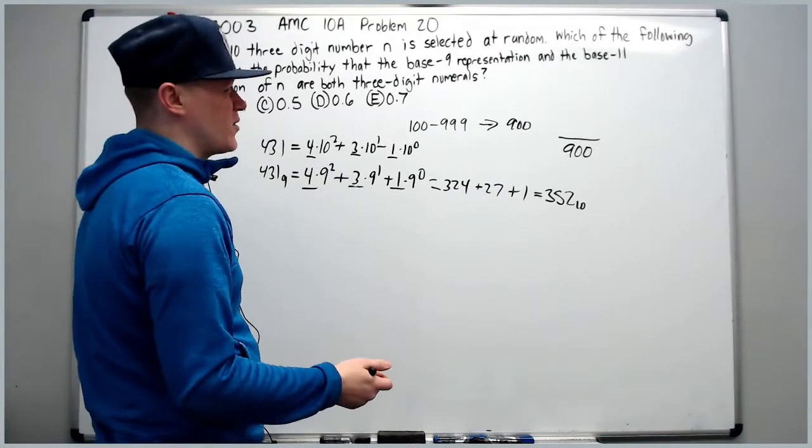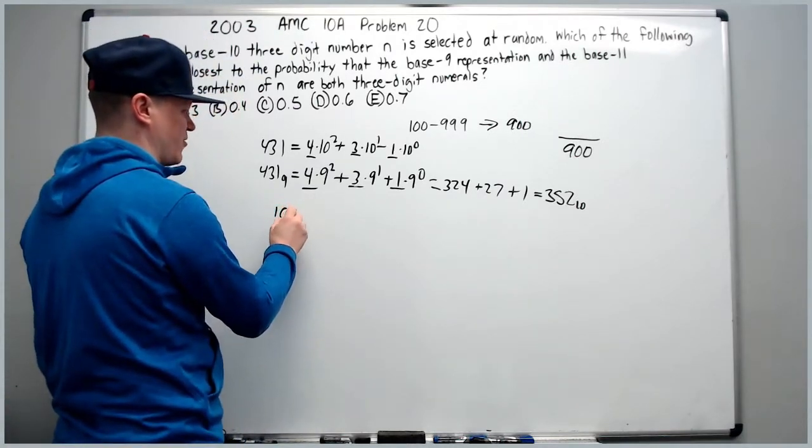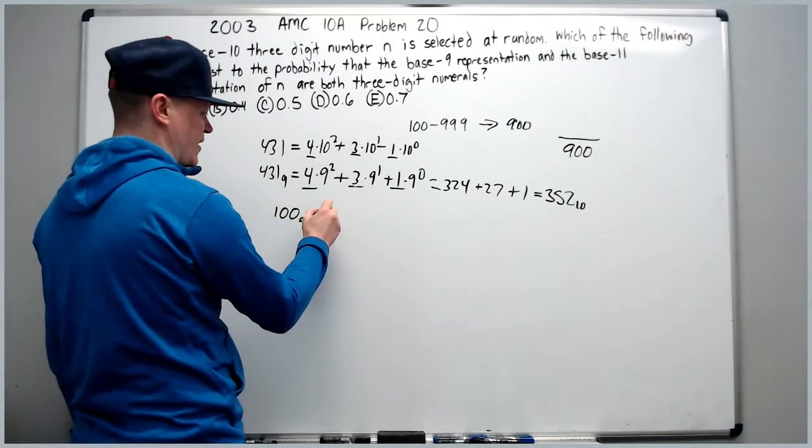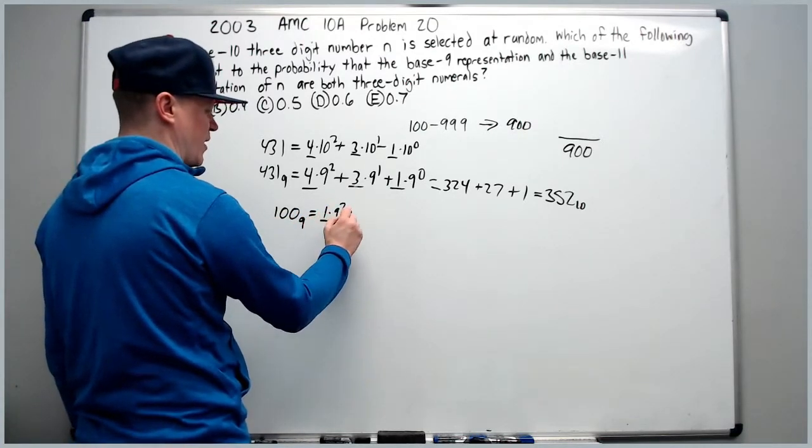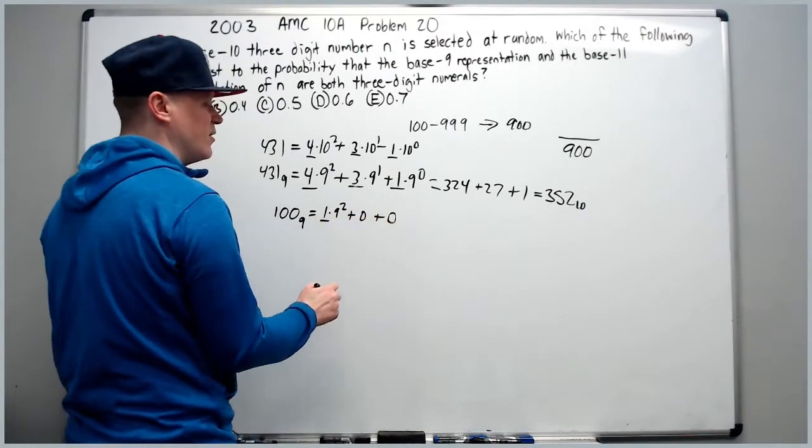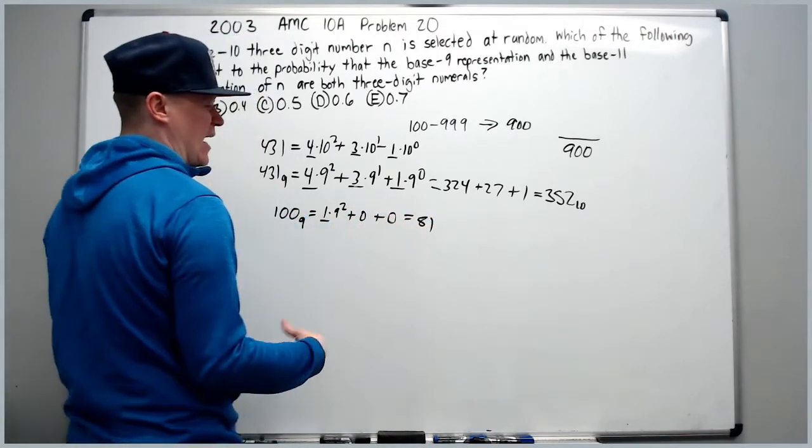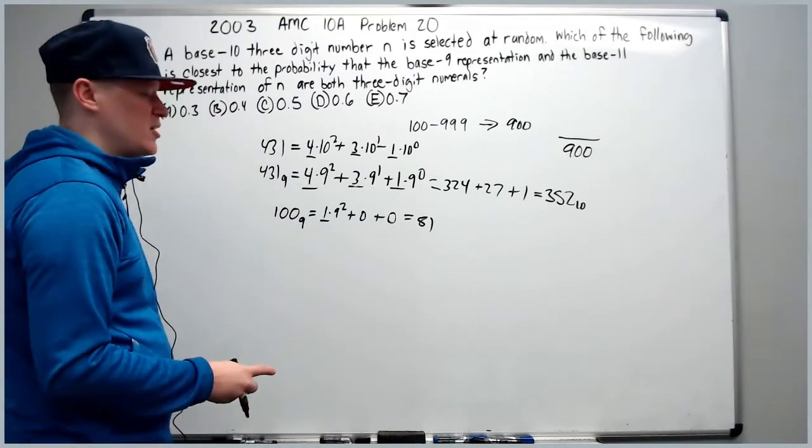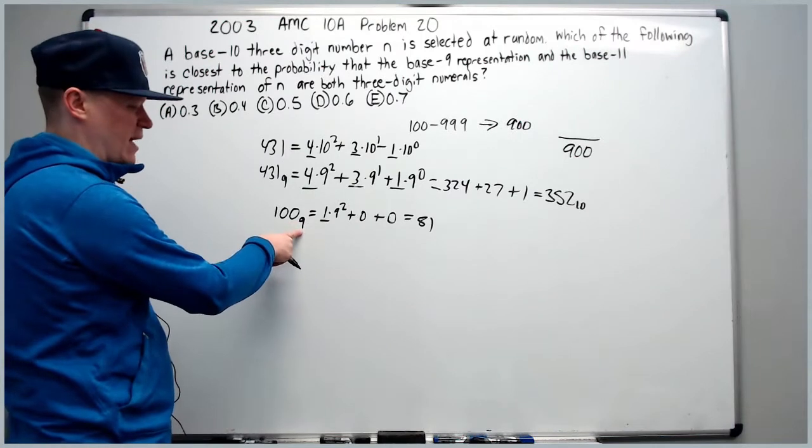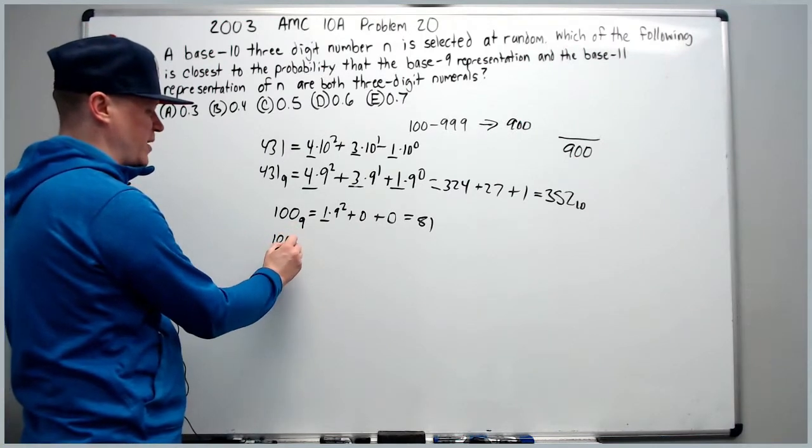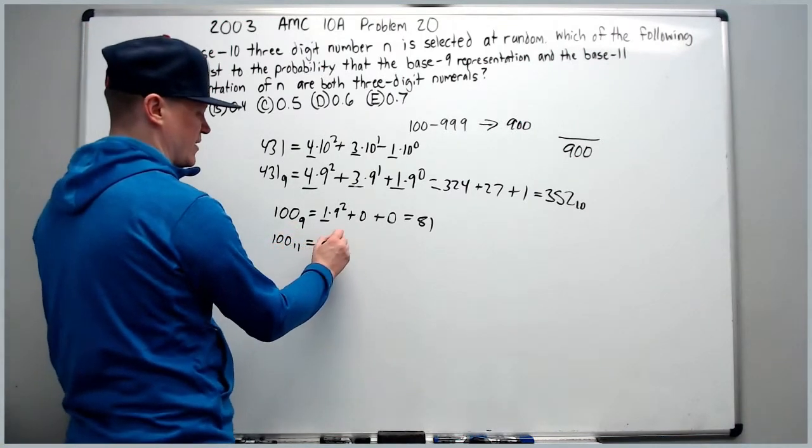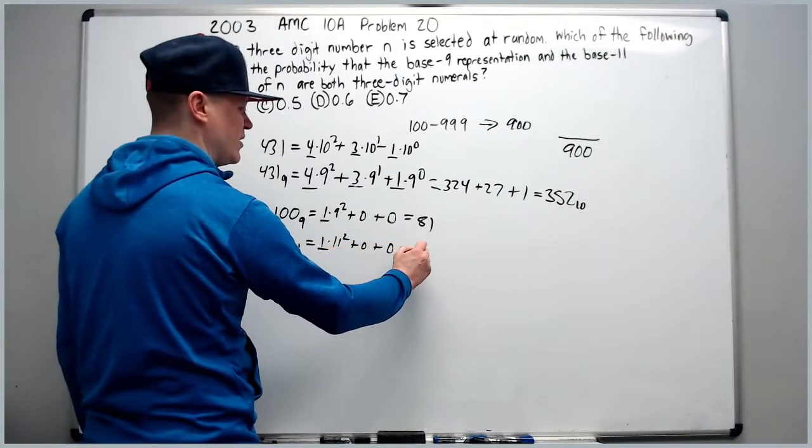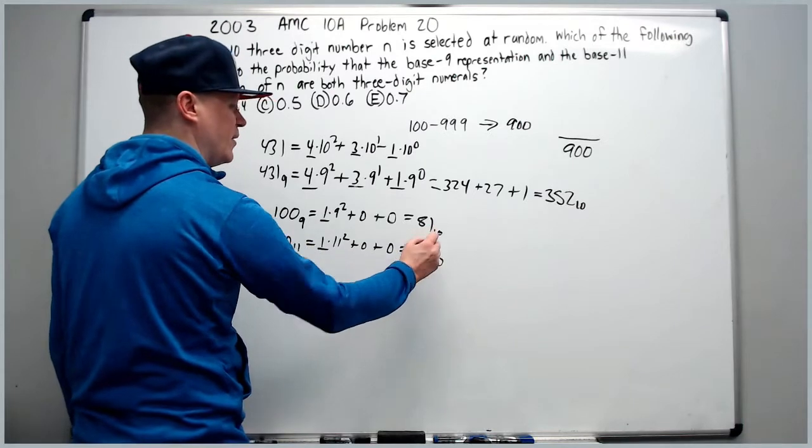Let's start with what's the smallest base 9 three digit number. It would be 100. But that's going to equal 1 times 9 squared plus 0 plus 0, and that's only going to equal 81, not a 3 digit base 10 number. So we probably aren't going to be restricted by the 9, but we are going to be restricted by the 11.